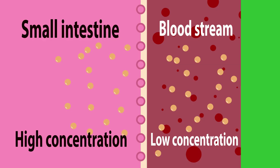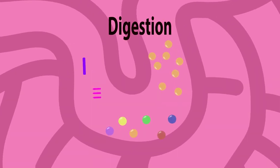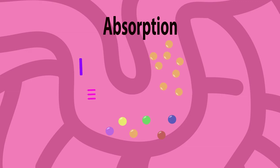Sugar, amino acids, fatty acids, and glycerol all use diffusion to move into the blood within the small intestine. So after digestion breaks down large molecules into small molecules, absorption of the small molecules happens inside our small intestine by diffusion into the blood vessels.